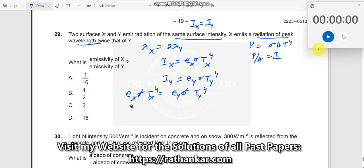Sigma, the sigma goes away. Now, I want e x by e y, e x by e y is equal to t y divided by t x all to the power of 4. We have got this.